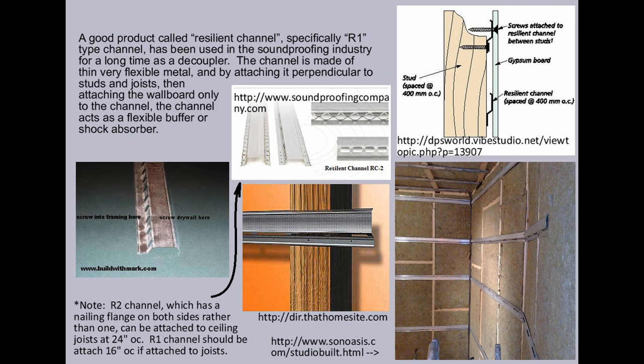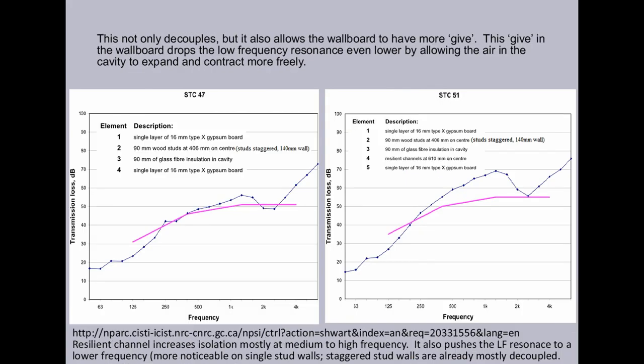A good product called resilient channel, specifically R1 channel, has been used in soundproofing for quite a long time as a decoupler. The channel is made of very thin flexible material, and by attaching it perpendicular to the studs, then attaching the wallboard only to the channel, the channel acts as a flexible buffer or shock absorber. This not only decouples, but it also allows the wallboard to have more give. This give in the wallboard drops the low frequency resonance even lower by allowing the air in the cavity to expand and contract more freely.